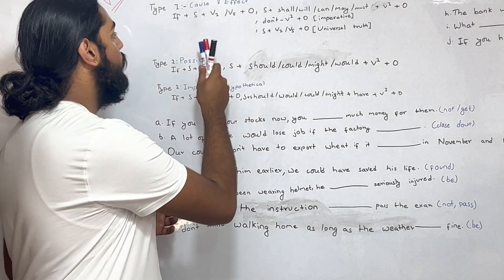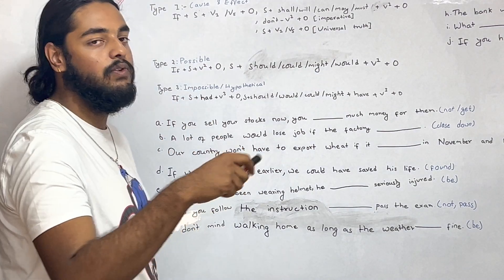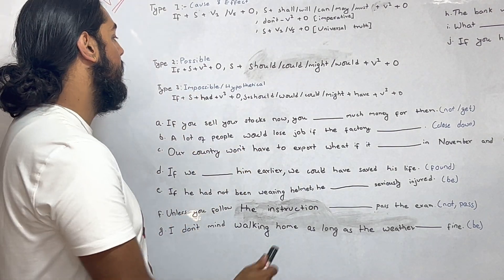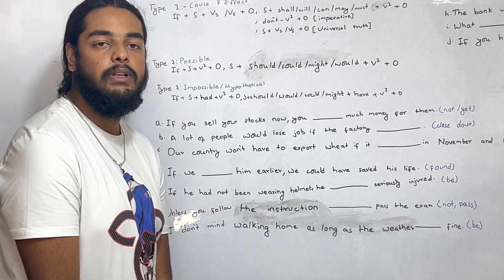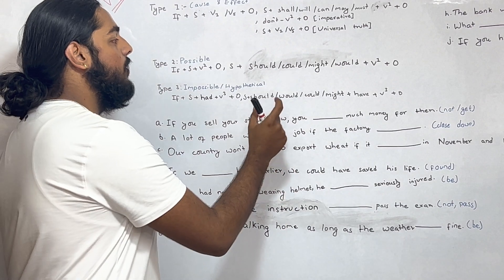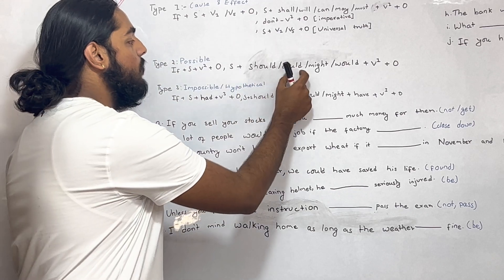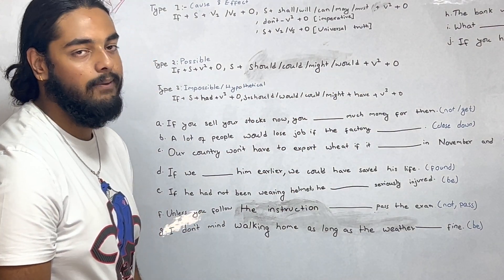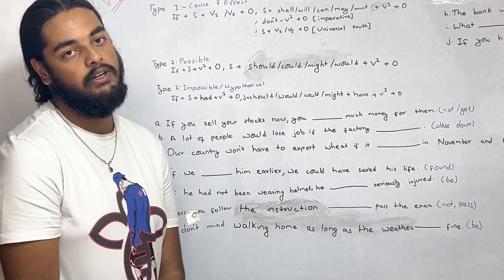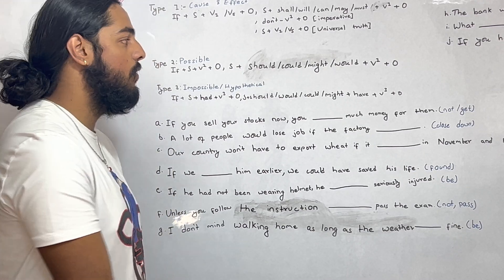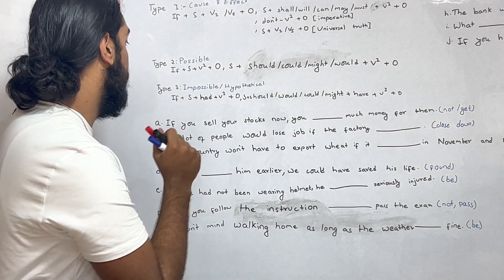Either type one — cause and effect — or type two — less possible. For type one, if-clause takes simple present; for type two, if-clause takes simple past — subject plus verb 2. Would might witness for type one. Just like: if she called me, I would receive her.